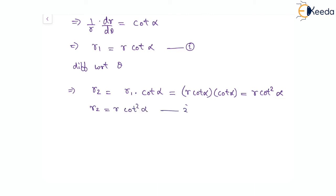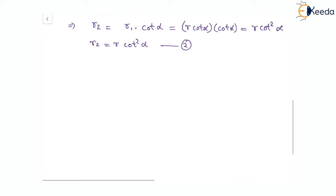With r₁ and r₂ known, we can look for the equation of radius of curvature: r squared plus r₁ squared to the power of three-halves, divided by r squared plus 2r₁ squared minus r times r₂.